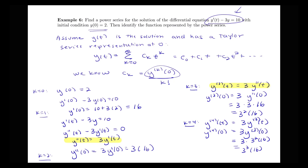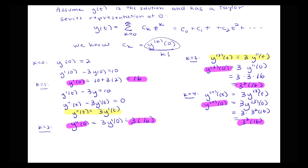We can see a pattern emerging. Using a different color to highlight: y'(0) equals 16, y''(0) equals 3 times 16, y'''(0) equals 3 squared times 16, and y''''(0) equals 3 cubed times 16. It looks like the k-th derivative evaluated at 0 equals 3 to the (k minus 1) power times 16, for k equals 1, 2, 3, etc.